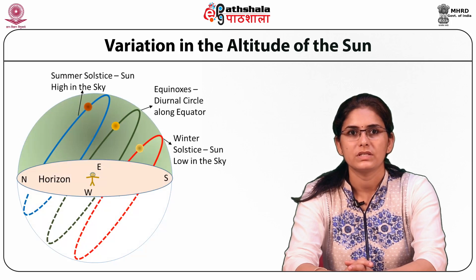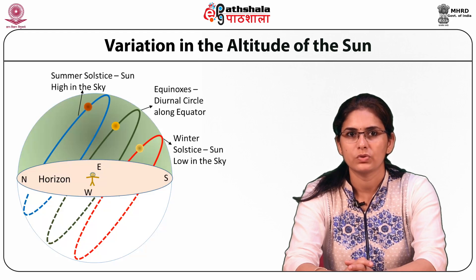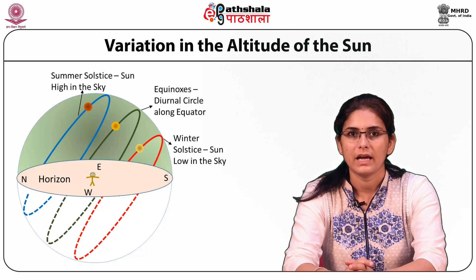Variation in the altitude of the sun: in this picture, the horizon of the observer is drawn. The observer is in the northern hemisphere, and the diurnal circles of the sun are also shown. All the diurnal circles of the sun lie between the diurnal circles of summer solstice and winter solstice. It is clear that for those living in the northern hemisphere, the sun is high in the sky around 21st June — it is summer time. Around 23rd December, the sun is lowest in the sky, therefore above the horizon for a short time — it is winter time in the northern hemisphere.